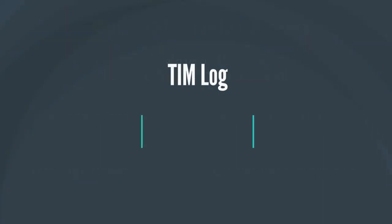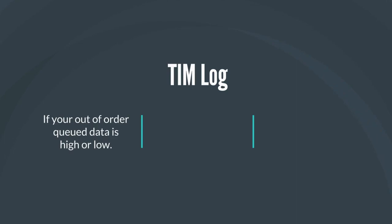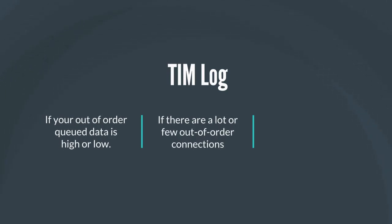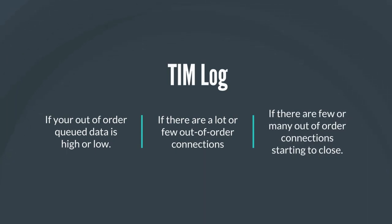By looking at data in the TIM log, as well as in the TIM status page or the TIM unsupported packet statistics page, you can see things such as: if your out-of-order queued data is high or low, if there are a lot or few out-of-order connections, or if there are few or many out-of-order connections starting to close.